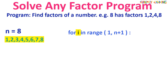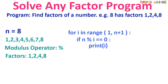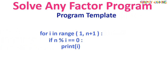The variable i will give us each number to check if it is a factor. We need to check which of them gives a remainder of 0. We will use an if statement with the modulus operator (%) to get the remainder. If it is 0, it means we have found a factor. In this program we just print the factors.